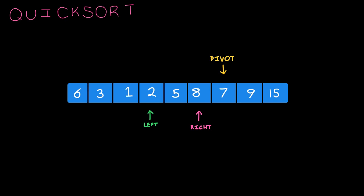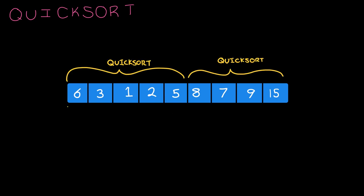Now we have an arrangement such that everything smaller than the pivot is on one side and everything bigger than the pivot is on the other side. So now we just do quicksort on these two halves. On the left side we pick a pivot element randomly — let's say it's 3. Then we walk through and move things smaller than 3 on one side and things bigger than 3 on the other side.